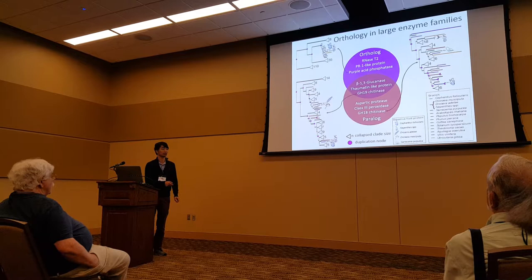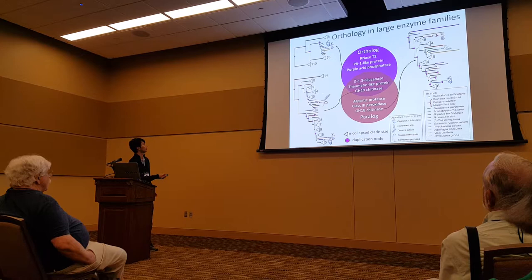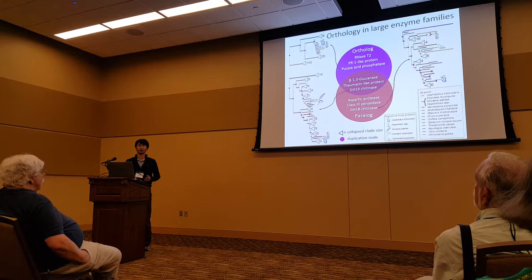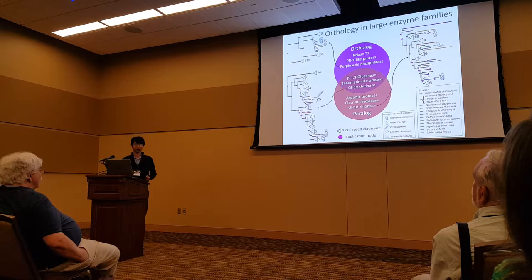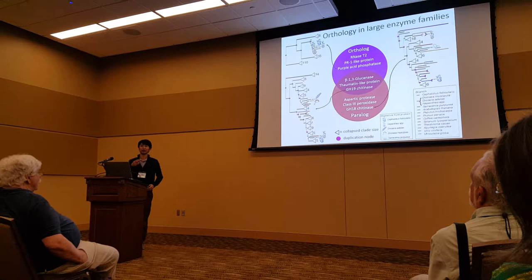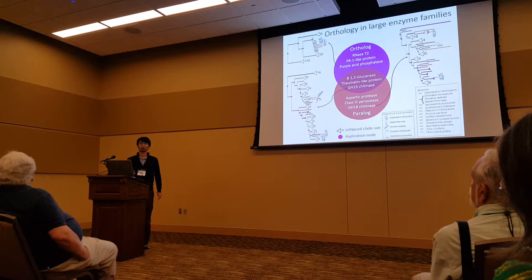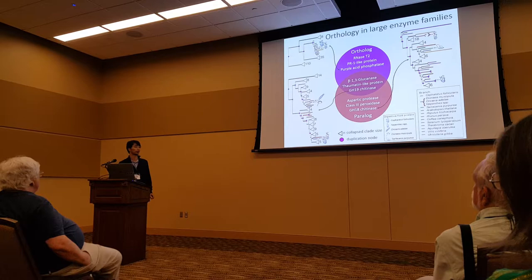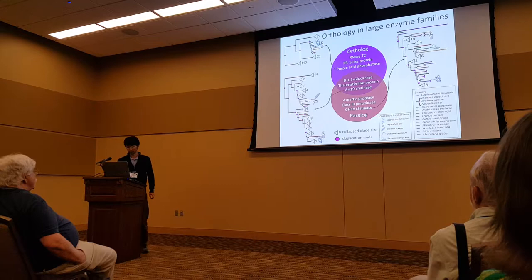If you compare these two enzymes from Australian and Asian pitcher plants, they are orthologs. But we also have different digestive fluid proteins from Venus flytrap that are also orthologs. What's surprising is that they are using orthologs very frequently. If you take one gene from a really large gene family, the probability of getting the same orthologous gene in an independent lineage is extremely low. So we hypothesized that there was a specific gene that could be easily repurposed for digestive function in their common ancestors.